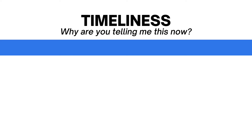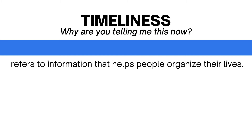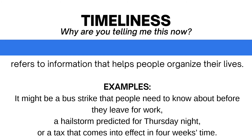The next one is Timeliness. Why are you telling me this now? It refers to information that helps people organize their lives. Examples: it could be a bus strike that people need to know about before they leave for work, a hailstorm predicted for Thursday night, or a tax that comes into effect in four weeks' time.